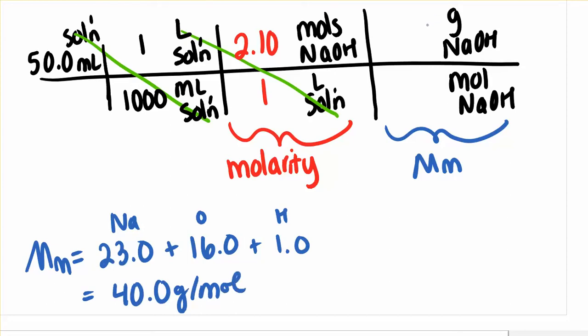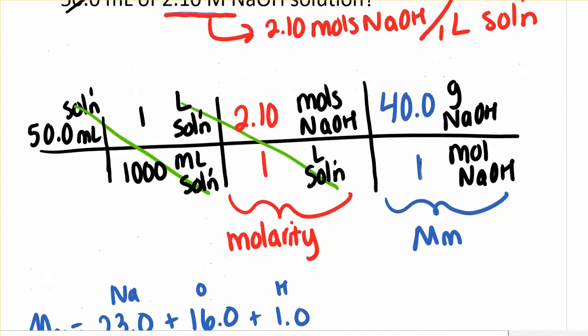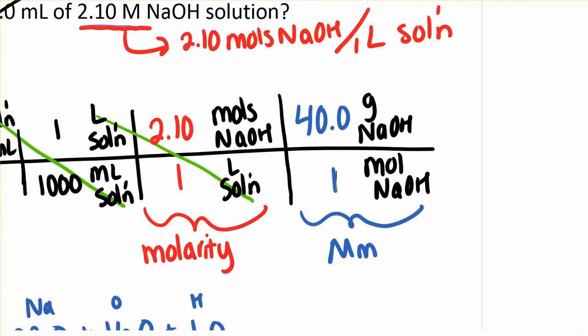So when I use that in my conversion factor, the 40 needs to stay with the grams. And there's an implied one there. Okay. So if I punch this out on my calculator, my calculator says the answer is 4.2.